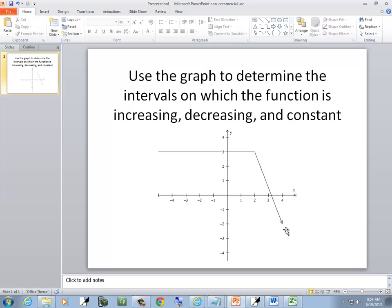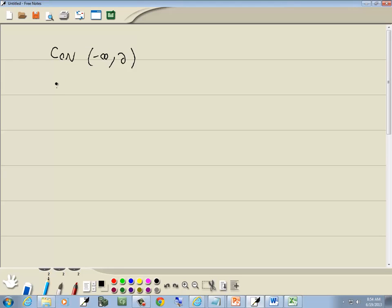And then it starts decreasing, and this arrow indicates it goes forever. So this is going to be decreasing from 2 to infinity. And that's our answer.